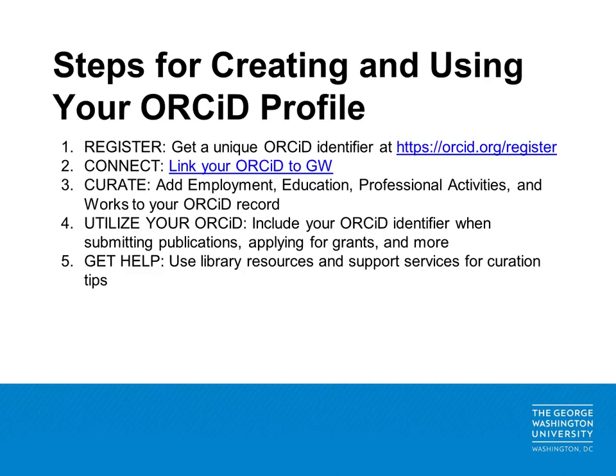So how do you quickly and effectively create and use an ORCID profile? First, start by registering for an ORCID account at ORCID.org/register. Next, GW researchers can connect their ORCID to GW. Third, you should curate your ORCID by adding employment, education, professional activities, and works to your profile. Fourth, utilize your ORCID when submitting publications and applying for grants to reduce some tasks associated with data entry. Lastly, get help by using library resources and other support services if needed.